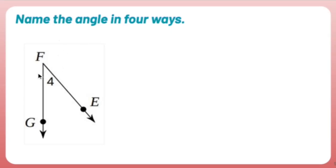Name the angle in four ways. When you name an angle, you have to figure out what your vertex is first. Your vertex is where the two rays that create your angle meet.